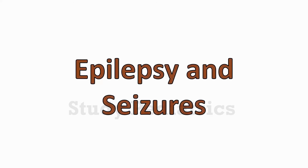This is an introduction to the CNS topic of epilepsy and seizures. Seizures are involuntary sudden jerky movements which may involve a part of the body or the whole body. Whereas epilepsy is defined as a group of seizures which are recurrent and aren't directly associated with a causative factor.